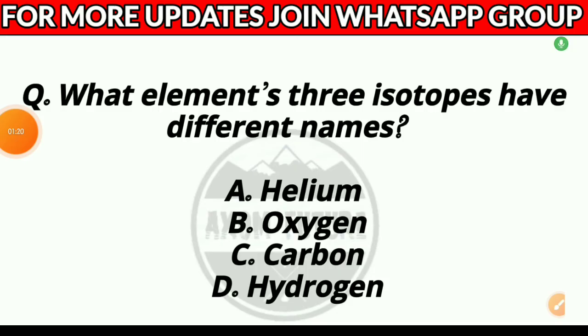Question 16. Which element's three isotopes have different names? Option A, helium; Option B, oxygen; Option C, carbon; or Option D, hydrogen. Answer: Option D, hydrogen.